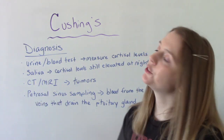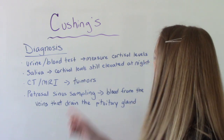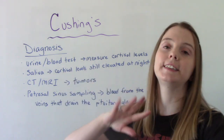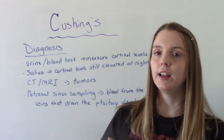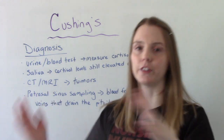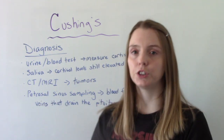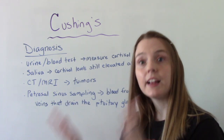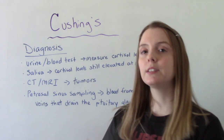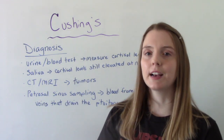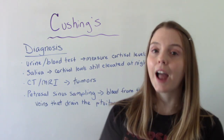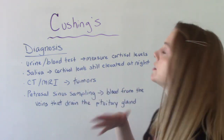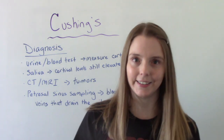They would ask you to do a saliva test. Cortisol levels in a person who does not have Cushing's syndrome vary throughout the day and fluctuate, but usually by nighttime they drop. With somebody who has excessive cortisol production, they're not going to drop at night — so cortisol levels will still be elevated even at nighttime.